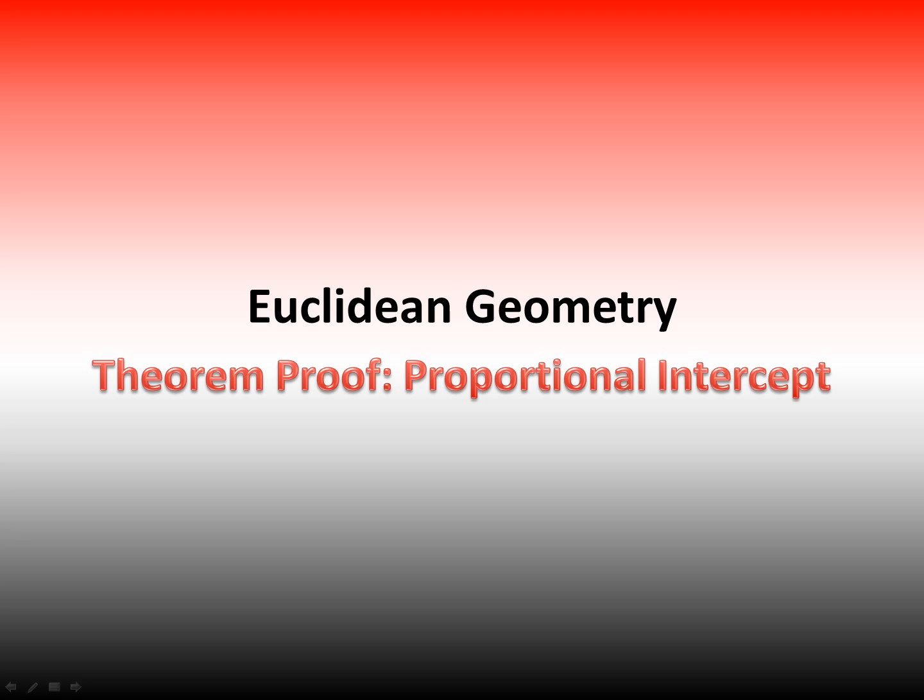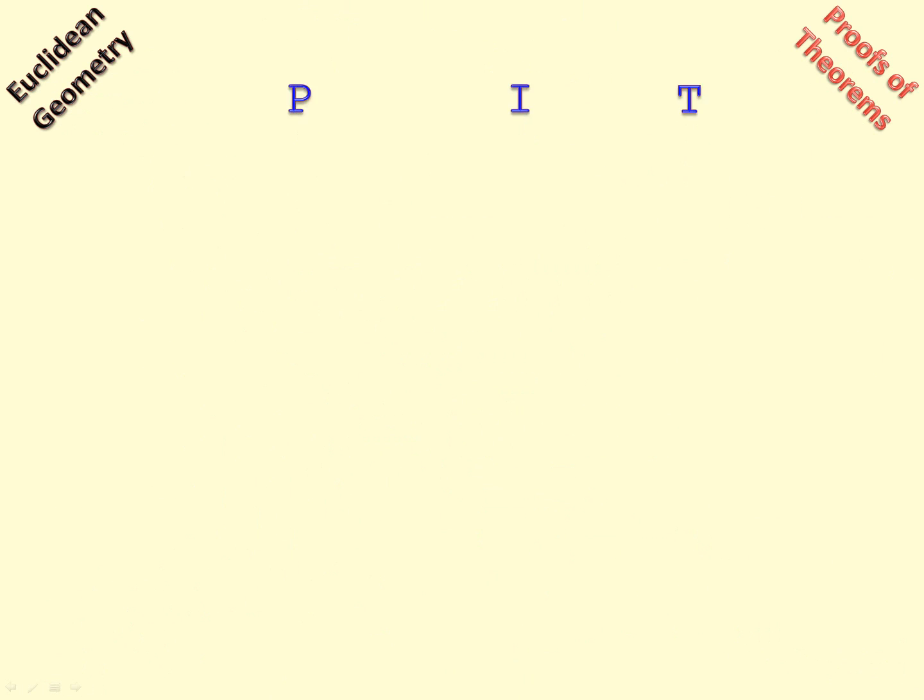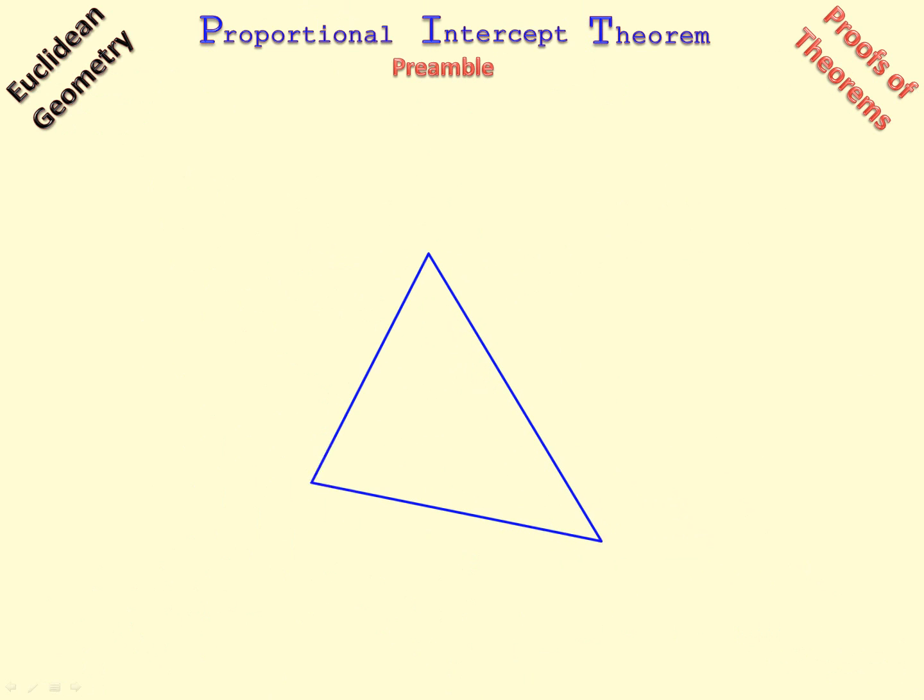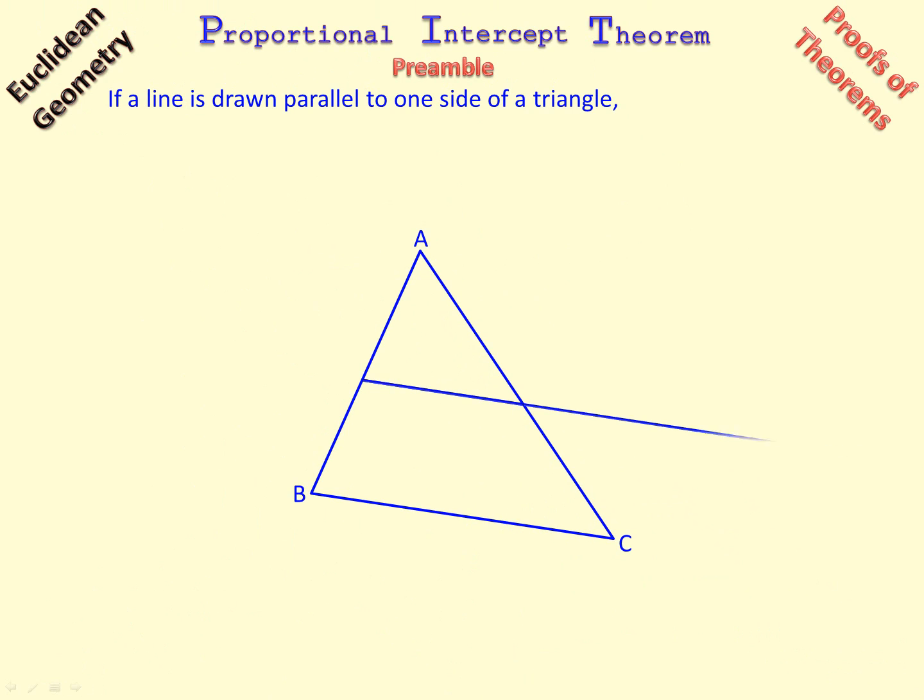Euclidean Geometry. Proof of the Proportional Intercept Theorem. So we'll start with a preamble. We draw a line parallel to one side of a triangle.